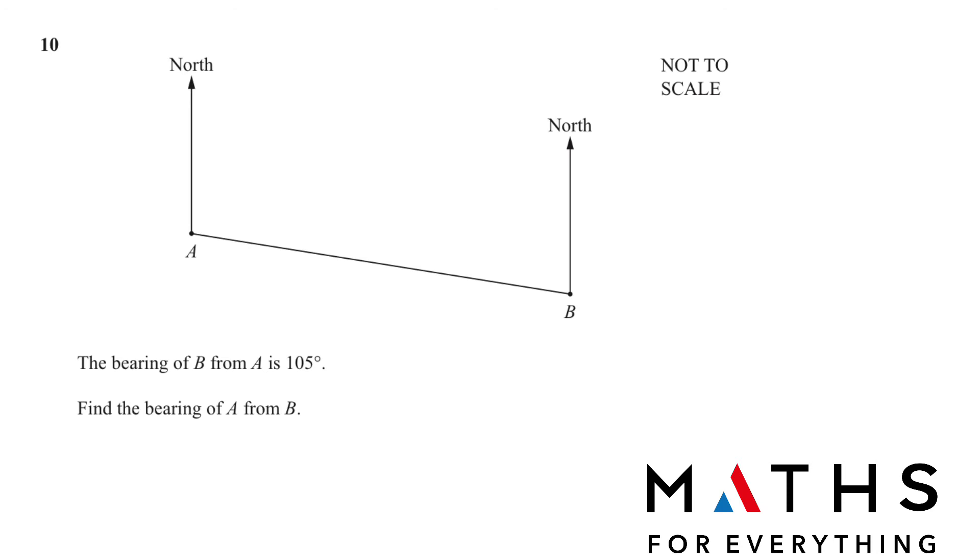Question number 10 is a bearing question. The bearing of B from A is 105. So A is 105. Bearing is always taken from the north and it goes clockwise. So this is the north and we are going clockwise. So this is the bearing of B from A, 105. Now we want to find the bearing of A from B. From B means again from north we are going and clockwise. So this is what we need to find. So this is outside our line, right?